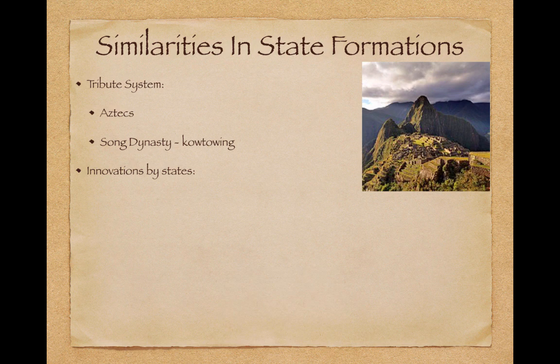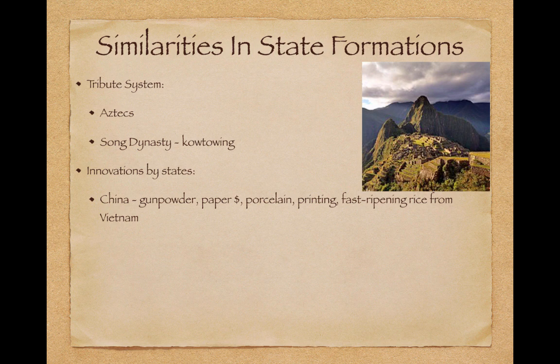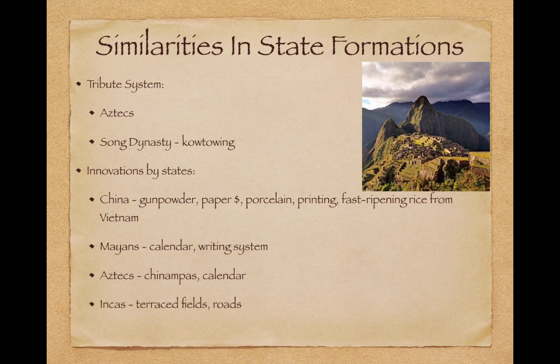There are innovations by states used to help grow and become powerful. China used gunpowder, paper money, porcelain, printing, and fast-ripening rice from Vietnam. The Mayans had a calendar and a writing system, and the Aztecs had chinampas and a calendar system as well. The Incas had terrace fields and roads to unite their empire. Mali was a center of learning and Timbuktu was a major trading city.